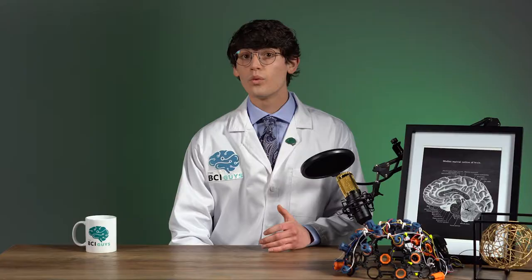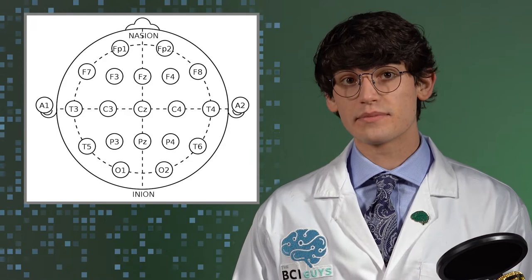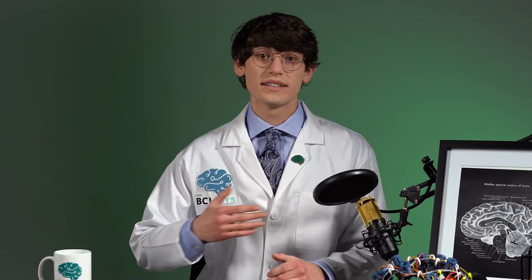When EEG was first being used, labs would have different methodologies for placing electrodes, making it really hard to translate results across labs. This inconsistency led researchers to create the 10-20 system, which uses percentages of the user's head circumference and other measurements to ensure consistency in placement. Other, more specific systems have been developed as electrode count has increased, but you'll see the 10-20 system most often.